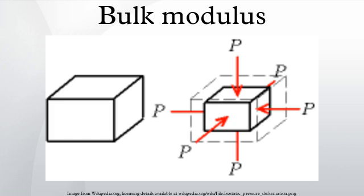The bulk modulus of a substance measures the substance's resistance to uniform compression. It is defined as the ratio of the infinitesimal pressure increase to the resulting relative decrease of the volume. Its SI unit is the Pascal, and its dimensional form is M1L-1T-2.